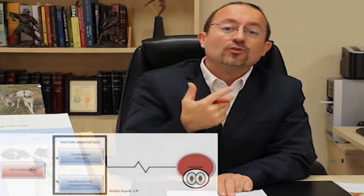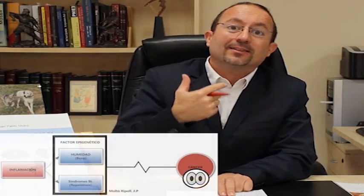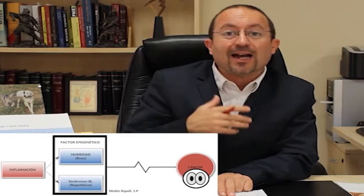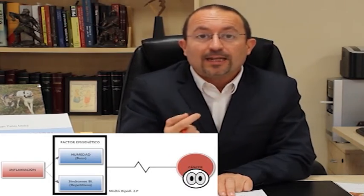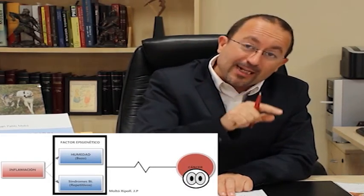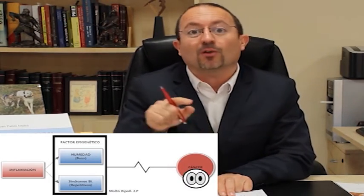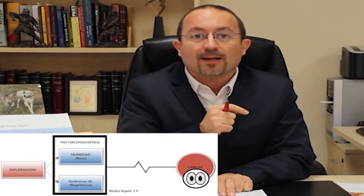Luego hablaremos de algo muy importante, que es la humedad, la flema o el TAN. ¿Qué es esto? ¿Cómo lo entendemos desde el punto de vista de la inmunología? Veremos que el TAN tiene que ver mucho con las enfermedades autoinmunes y tenemos que entender el proceso por el cual esto se lleva a cabo.